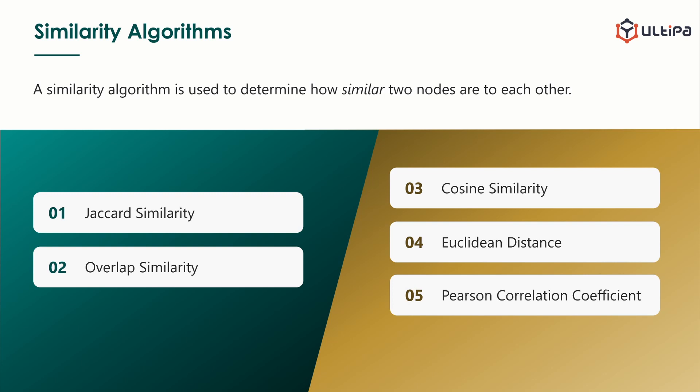These are the five algorithms we are going to cover. We put them into two parts according to the criteria they use to measure the similarity, which are neighborhood and property. We will discuss the first part in this video.